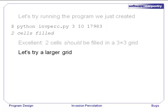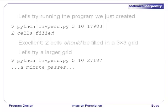Let's try a larger grid. Python invperc.py on a 5x5 grid with random values in the range 1 to 10, and a different random number seed. A minute goes by, finally we hit Control-C. Hmm, it's time to fire up the debugger.